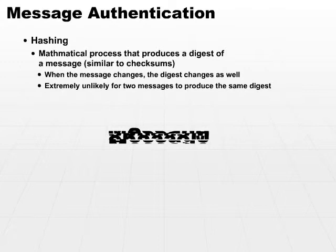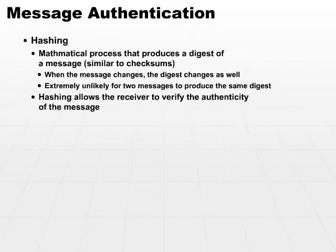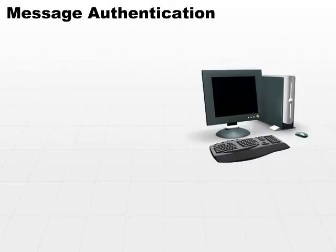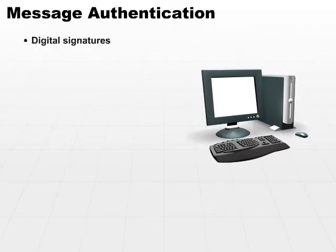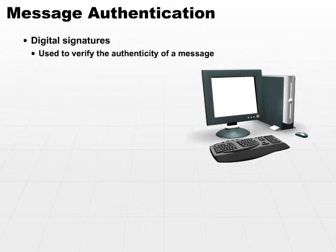It represents what the message status or the message contents actually looks like. Hashing allows the receiver to verify the authenticity of the message. In other words, if you take a message and you hash it, and you end up with the same hash value that the sender sent you, chances are it didn't change in transit. Digital signatures give us the ability to verify the authenticity of a message.